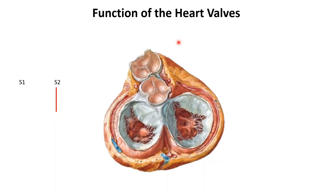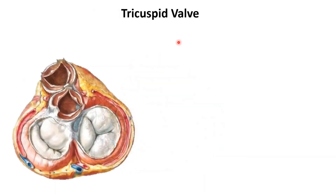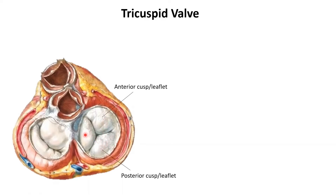Now let's look at the heart valves in a little bit more detail, beginning with the AV valves — namely the tricuspid valve. From the name you can see 'tri' — the tricuspid valve has three cusps. The anterior-most cusp is the anterior cusp, the one behind it is the posterior cusp, and the one closest to the septum is the septal cusp.